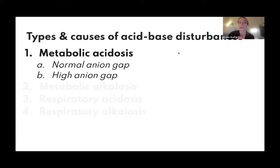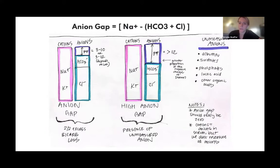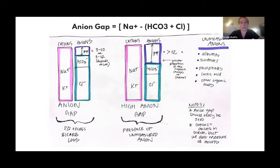When we talk about the anion gap, there's the principle of electrochemical neutrality — cations and anions should neutralize to zero. However, we only measure certain ions: sodium as a cation and bicarb plus chloride as anions, though some include potassium. This gives a normal anion gap of roughly 4 to 12. That gap is normal because there are anions we're not measuring in that equation.